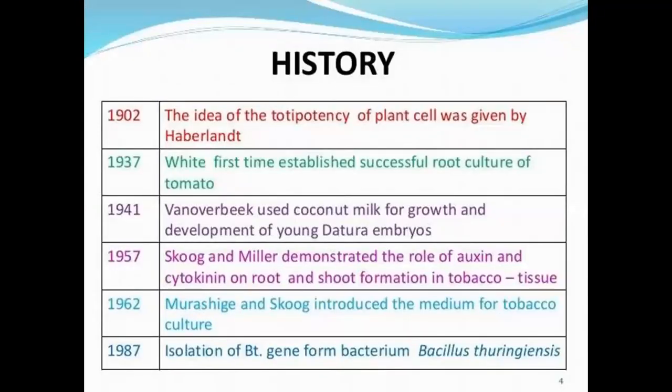In 1902, the idea of totipotency of plant cells was given by Haberlandt. In 1937, White first time established successful root culture of tomato. And in 1941, Wennenberg used coconut milk for growth and development of young natural embryos.